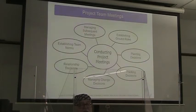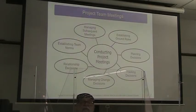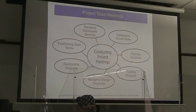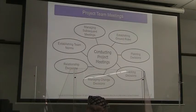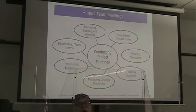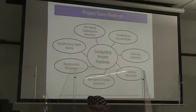We want to establish team norms. The formal word for unwritten rules is 'mores' — it comes from the same root as the word 'morals.' It can be extremely embarrassing when someone who doesn't know the norms violates them. And then we're going to have to manage our subsequent meetings. All of these things are things that, as a project manager, you're going to have to do.